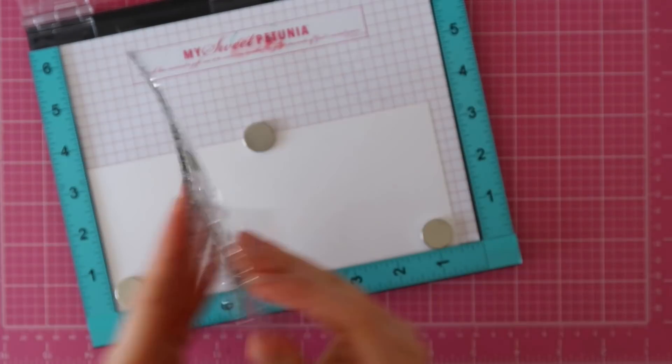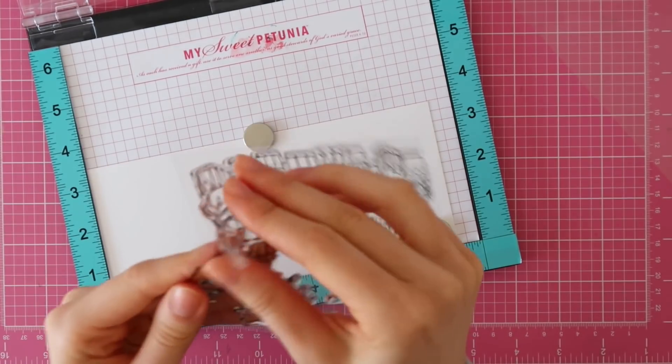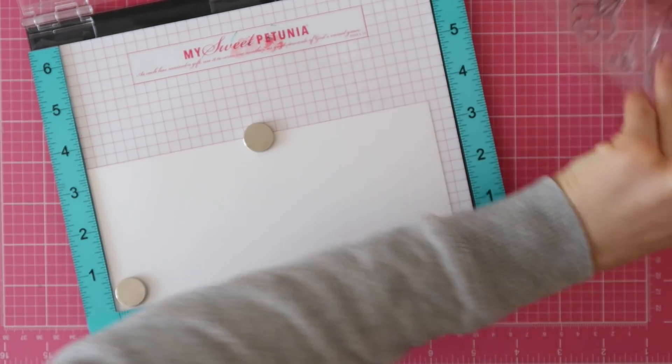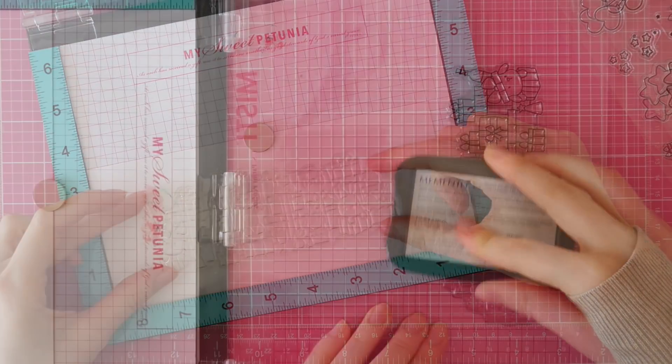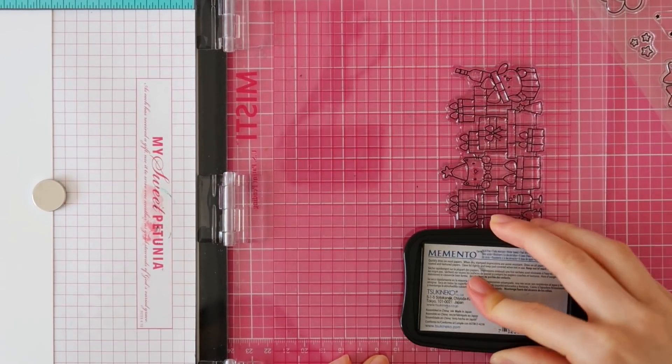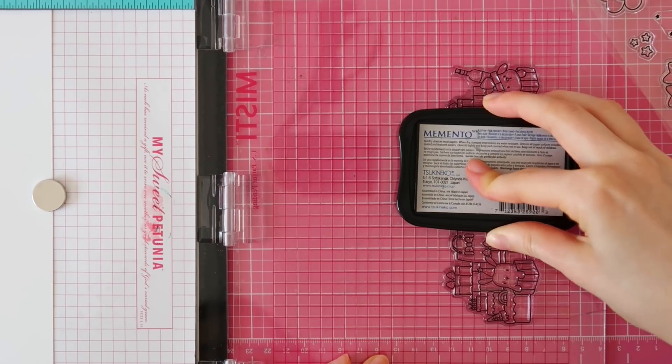Then I also cut a piece of white cardstock to 8 inch by 3.5 so I could stamp my image from the Birthday Bash stamp set from Mama Elephant on there.